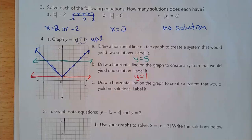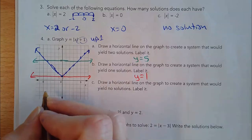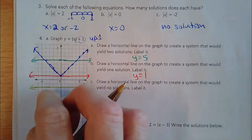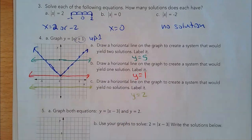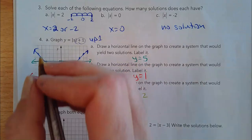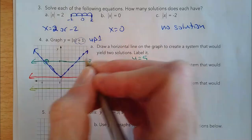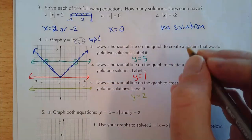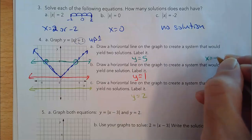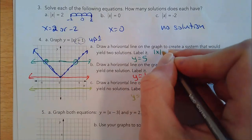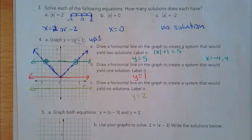And to draw a horizontal line with no solutions means they never intersect. Anywhere below y equals 1 would work — I'll just pick negative 2. So on the first case with y equals 5, where do the graphs meet? The x values where they meet are negative 4 and positive 4.